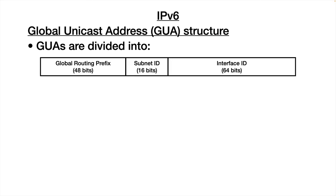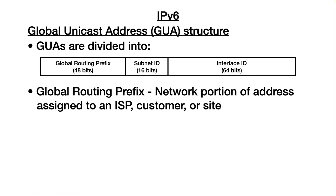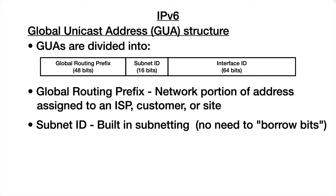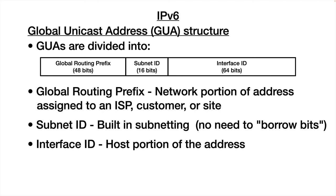The structure of a global unicast address is as follows: it is divided into a routing prefix, a subnet ID, and an interface ID. The global routing prefix relates to the network portion and is typically assigned to an ISP or a company. Since borrowing bits for subnets was common practice in IPv4, it's built into the structure — you have 16 bits for a subnet ID, giving a lot of subnets within your organization. The 64 bits for the interface ID is the host portion of your address.